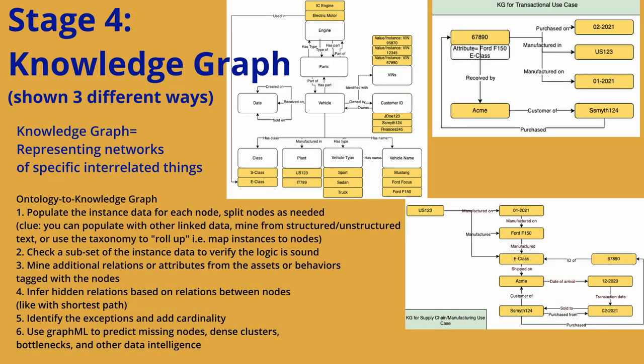You don't necessarily have to have a formal ontology to have a knowledge graph — there are other ways to get to a knowledge graph. But think of the ontology stage as creating that framework: a representation of the global entities. It doesn't have to be a true RDF ontology, but it is a representation of universal entities so you can then get to the knowledge graph stage, where you are populating instances with the very specifics of your graph. We are going to take all of the things identified as instance data from our taxonomy and thesaurus, and since they rolled up into the universal classes, we can populate those instances very quickly.